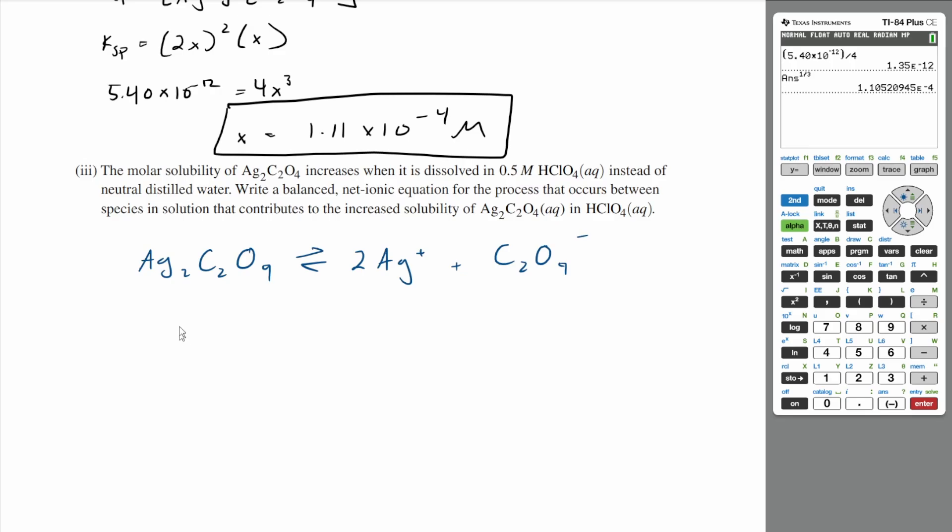What does happen a lot is your perchloric acid is going to dissociate. Perchloric acid is a really strong acid, which means it's going to dissociate almost 100% in solution. So it's going to dissociate completely into H+ and your perchlorate ion.